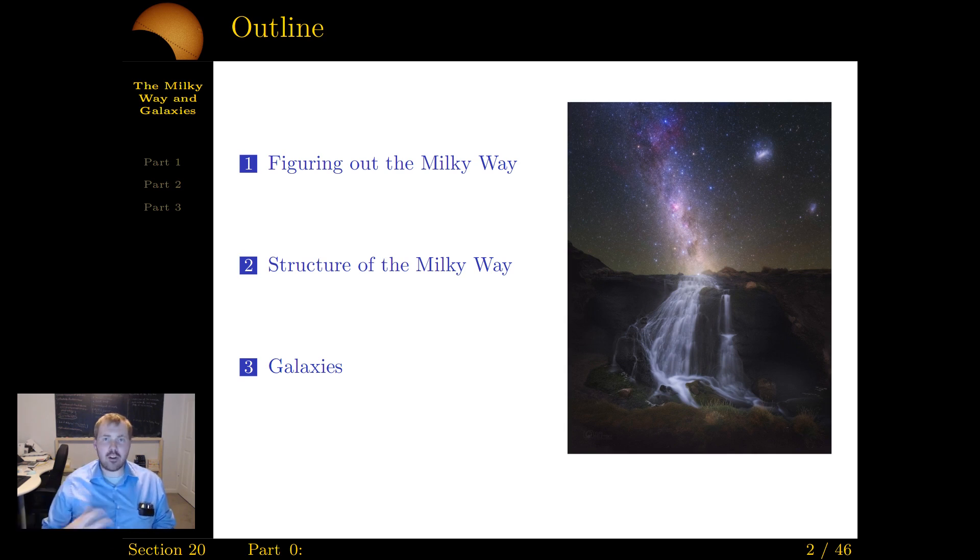From there we'll move on to our next section. We'll start bringing down what's the structure of the Milky Way. In this one we'll figure out how we figure out what the Milky Way is, and then we'll start talking about the specific structures, what we know about its shape and composition. From there, we'll end this section talking about the galaxies that we've discovered, what kind of ways can we classify the galaxies, and what shapes are they going to be in.